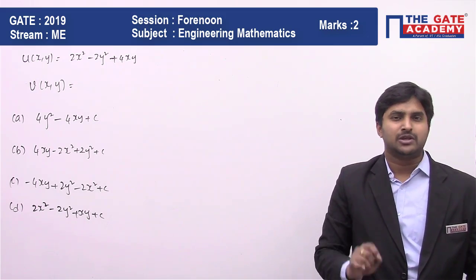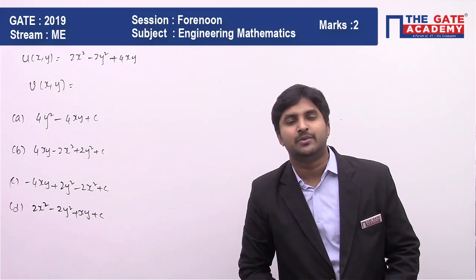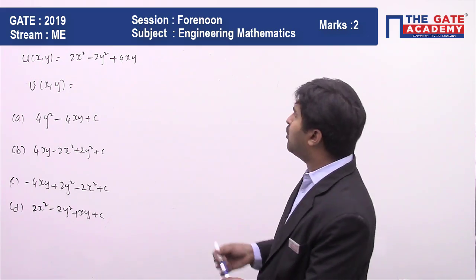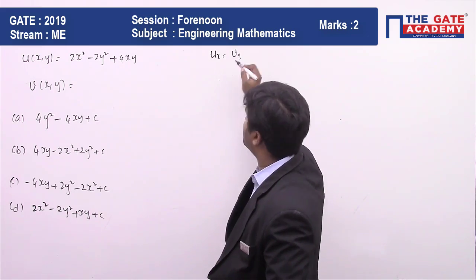Because we know that if it is an analytic function, then u_x should be equal to v_y. These equations are what we call the Cauchy-Riemann equations, which should be satisfied.